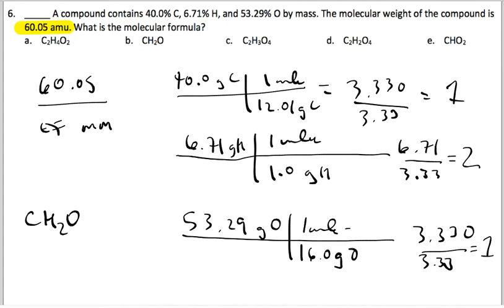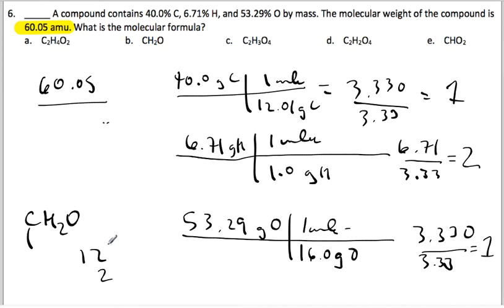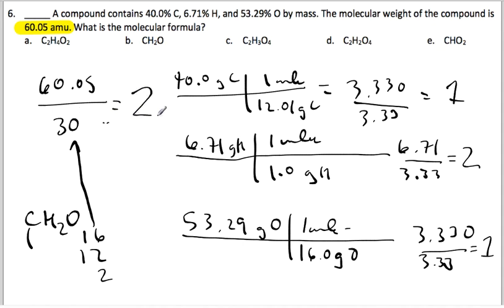Now I need to put the molar mass of the empirical formula on the bottom of the fraction. Carbon is 12, two hydrogens is 2, and oxygen is 16 — totaling 14 plus 16. The molar mass of the empirical formula is 30. So I take 60 divided by 30, and the magic number is 2.